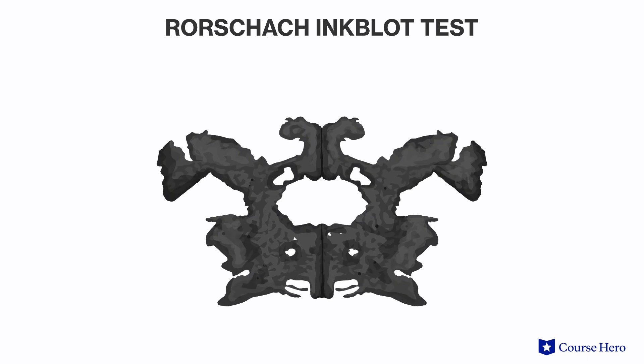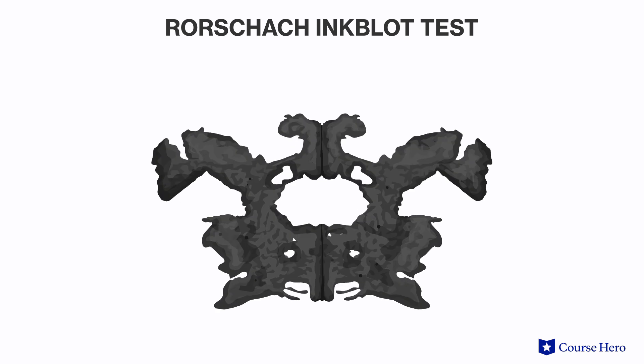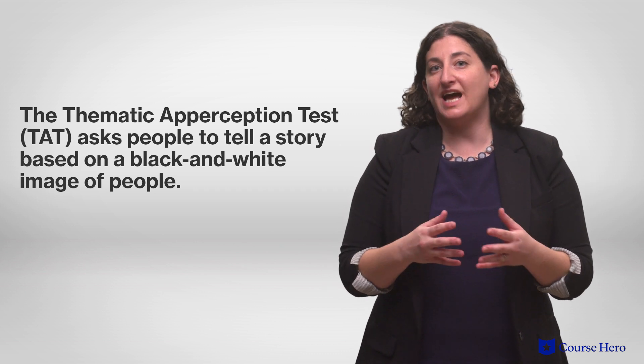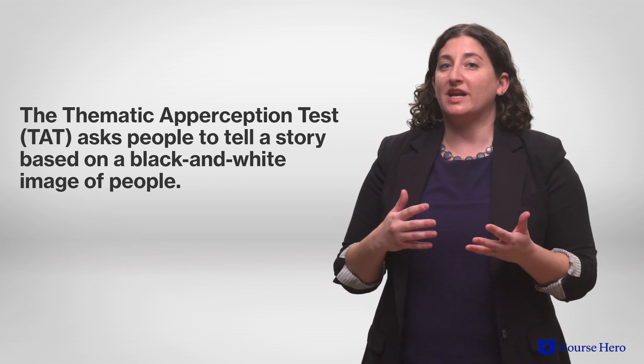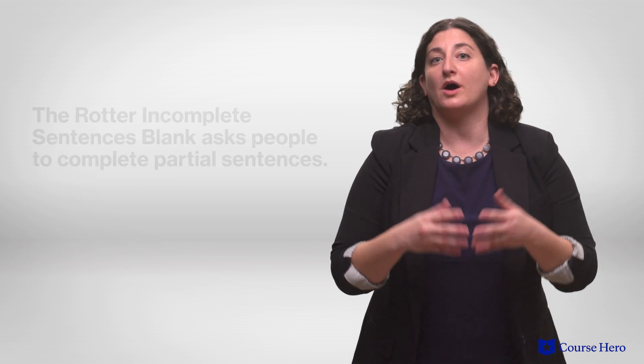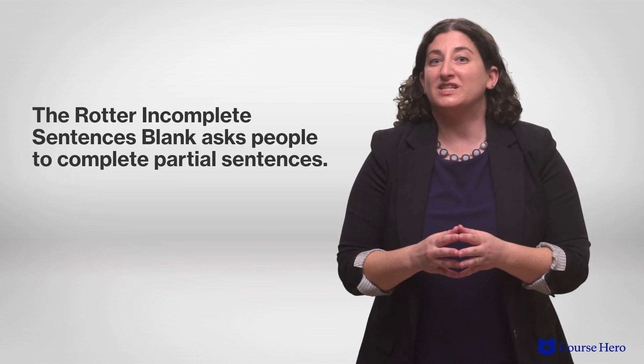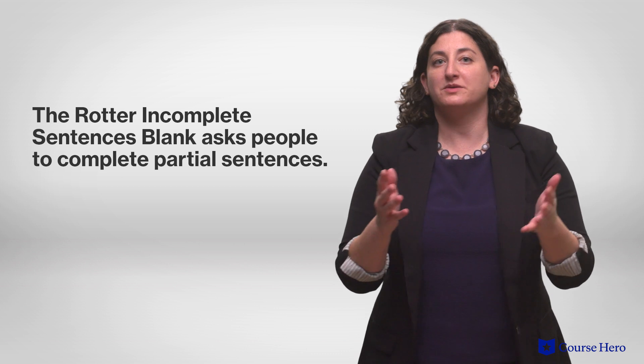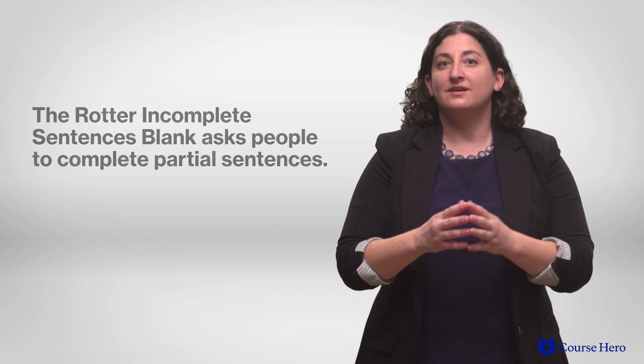The most famous projective test is the Rorschach inkblot test, where people are presented with a series of cards with ambiguous inkblots on them and asked, 'What might this be?' Other projective tests include the Thematic Apperception Task, or TAT, which asks people to tell a story based on black and white images of people, and the Rotter Incomplete Sentences Blank, which asks people to complete partial sentences like 'When I was a child' or 'I need.' These projective tests were historically very popular and are still familiar to us today because of the distinct role they play in cartoons and movies, but they lack reliability and validity.